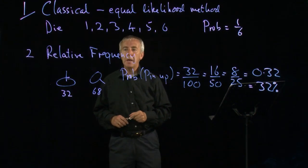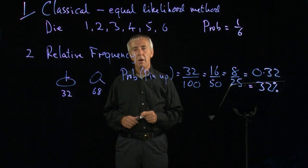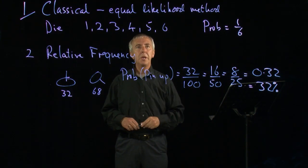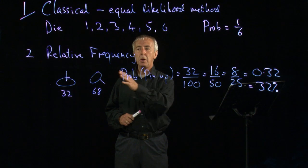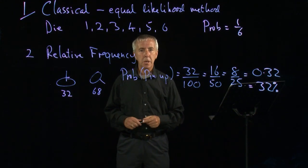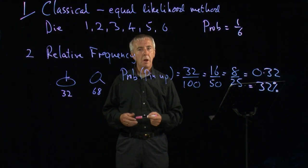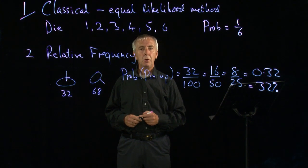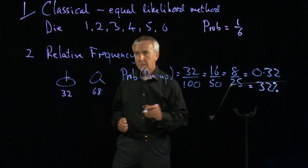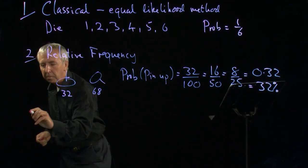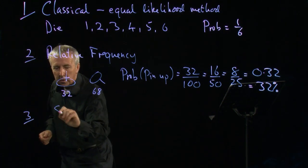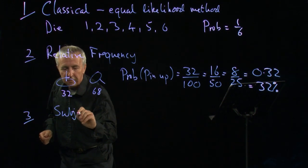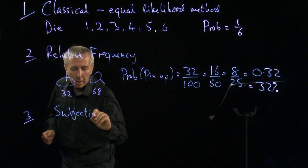Now, some events we can't handle in either way, because they're not equal likelihoods, and we don't have a lot of data historically to go on. Things, for example, like football matches or general elections. So the third definition we might call the subjective definition.